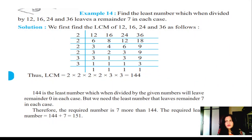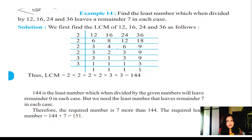Next problem: Find the least number which, when divided by 12, 16, 24, and 36, leaves a remainder of 7 in each case. We have to find the LCM — they are telling least number, that is Least Common Multiple. We find LCM of 12, 16, 24, and 36. Start with the lowest prime number 2: divide 12, 16, 24, 36 by 2 repeatedly.